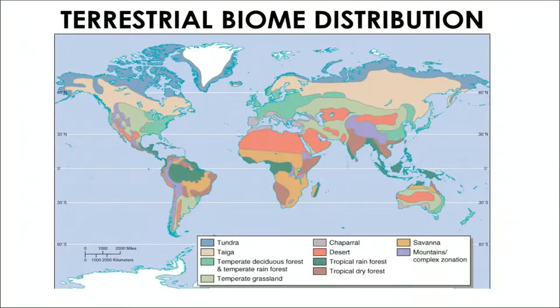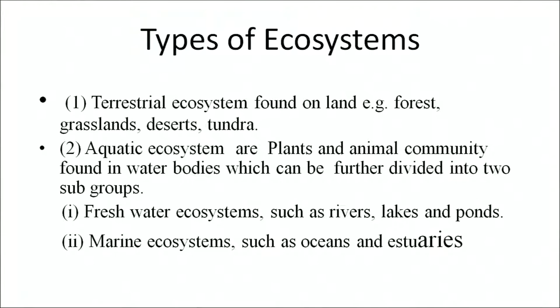In this figure, you can see the distribution of deserts, grasslands, tropical, temperate, deciduous forests, and the mountains and mixed zones. The terrestrial ecosystems are found on land, for example, forests, grasslands, deserts and tundra. Aquatic ecosystems are plants and animals found in water bodies, which can be further divided into two subgroups: freshwater ecosystems such as rivers, lakes and ponds, and marine ecosystems such as oceans and estuaries.